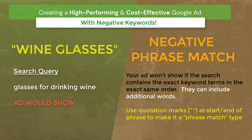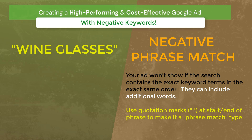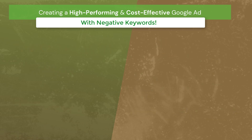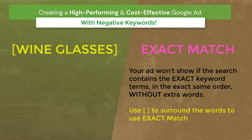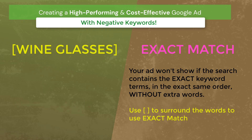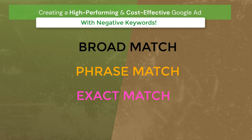The option you probably won't use that often would be exact match. With brackets, if you had wine glasses, then if somebody did an exact search just for those words exactly — no words added before or after — then the negative keyword would work and your ad would not be triggered. It has to be precisely and exactly that term. So you have broad match, phrase match, and exact match — those are your negative keyword types.